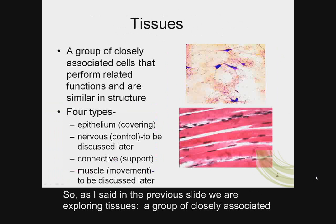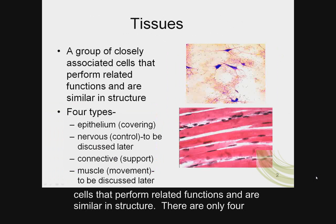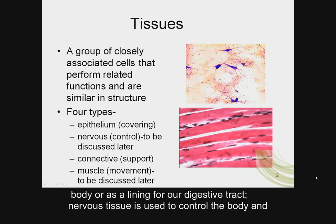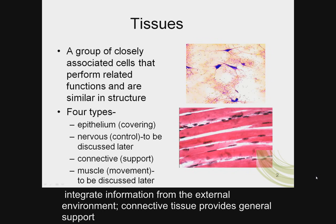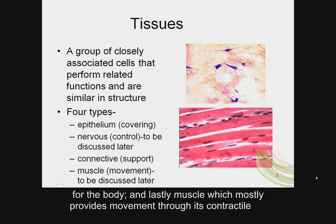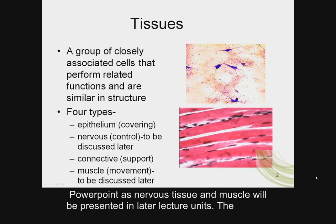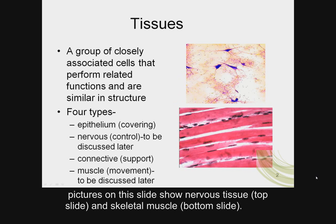We are exploring tissues — a group of closely associated cells that perform related functions and are similar in structure. There are only four different types of tissue in the human body: epithelium, which acts as a covering of the body or lining for our digestive tract; nervous tissue, used to control the body and integrate information from the external environment; connective tissue, which provides general support; and muscle, which mostly provides movement through its contractile properties. I will speak primarily of epithelium and connective tissue in this PowerPoint, as nervous tissue and muscle will be presented in later lecture units.